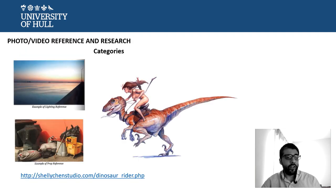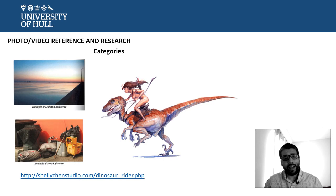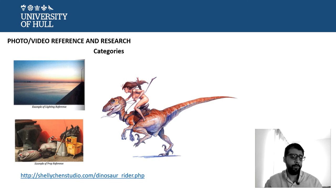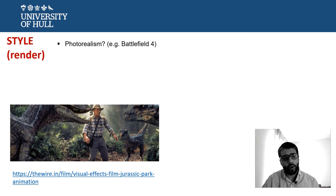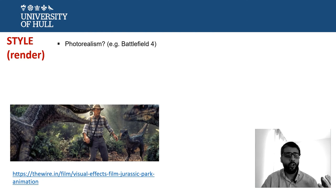When you do your visual research, you need to organise the information gathered through categories. It's not the same, for example, to look for references in terms of the character itself — imagine you are designing this dinosaur or a companion character — as it is to look for references about the environment, the light, or the colours. The basic idea is that you get the vocabulary of the concepts you want to communicate through your work. If you cannot use the right words, maybe you cannot communicate effectively what you are up to.